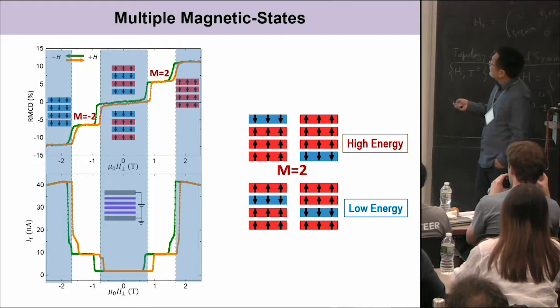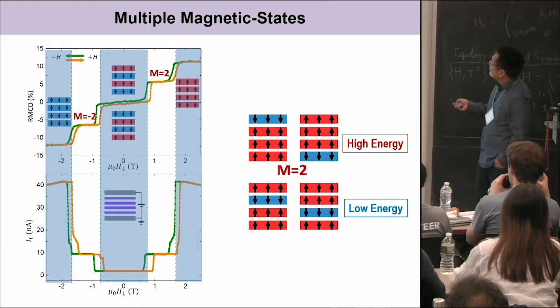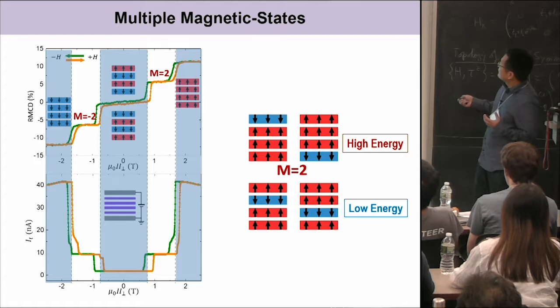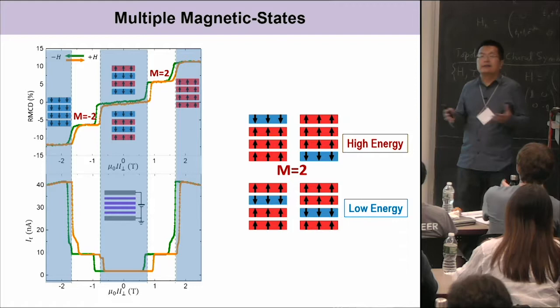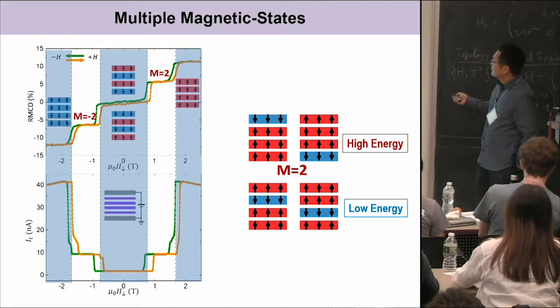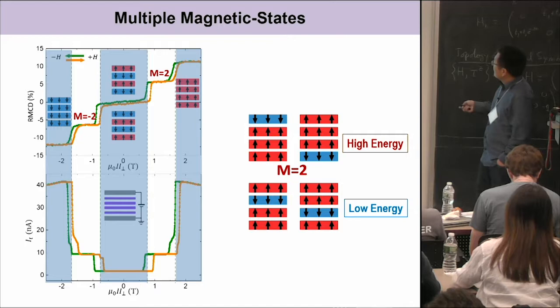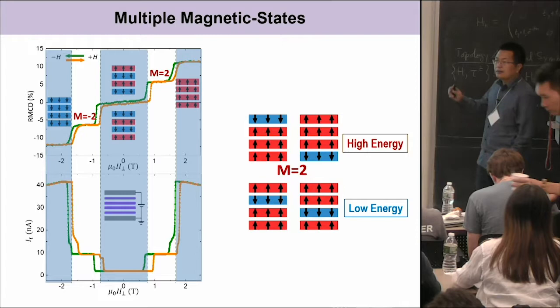The total magnetization is the same for these states — they're degenerate in terms of magnetization. However, if the system favors interlayer antiferromagnetic coupling, the top two states have only one antiferromagnetic interface, while the bottom two states have two antiferromagnetic interfaces. So if the system favors antiferromagnetic coupling, the bottom two states should have lower energy than the top two states. We focus on these two lower-energy states, which are also energy-degenerate — we call them bistable states.